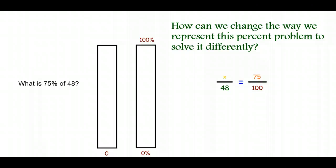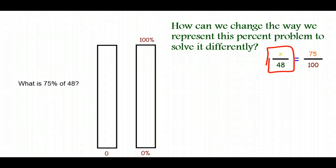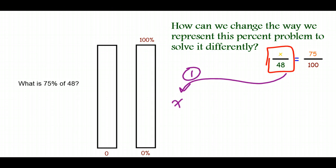There's not a whole lot we can do with X over 48 — X is a variable, we can't simplify it with the 48. But we can do some things to 75 over 100. We could simplify it: 75 over 100 is 3 fourths. That makes it a lot easier to solve. Once it's simplified to 3 fourths, we can turn it into an equivalent fraction with a denominator of 48 — 48 times 3 is 144, divided by 4 is 36 — much easier than 48 times 75 divided by 100.